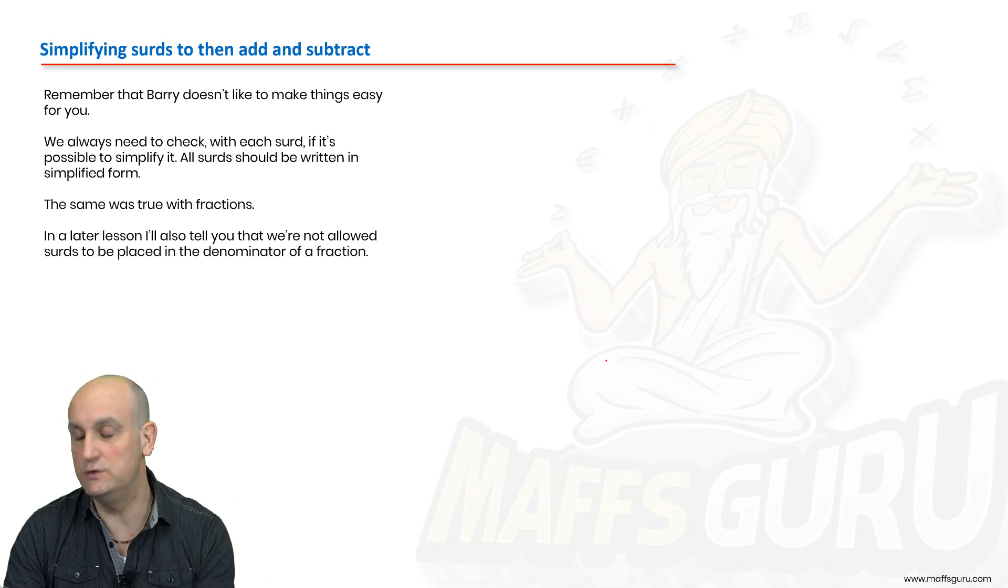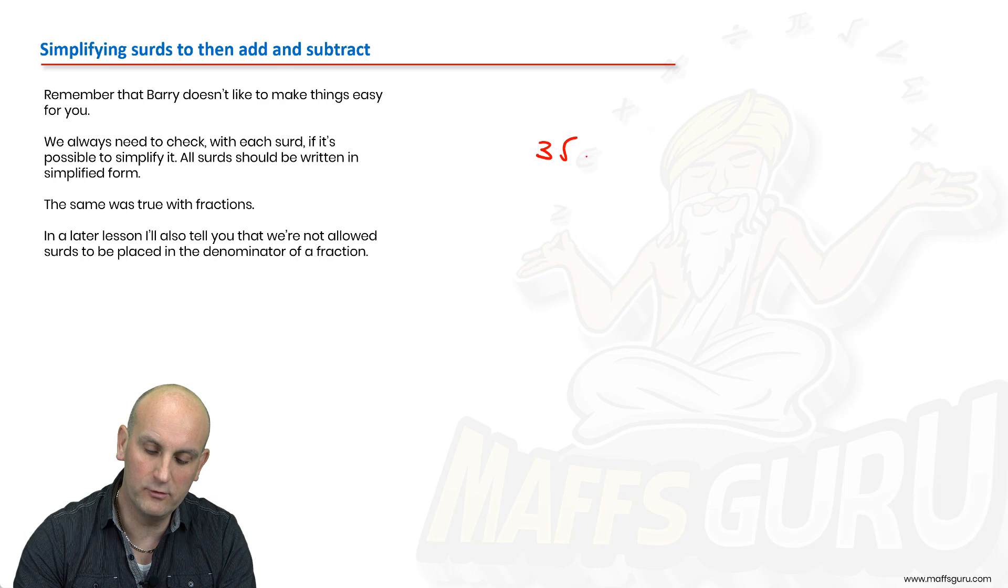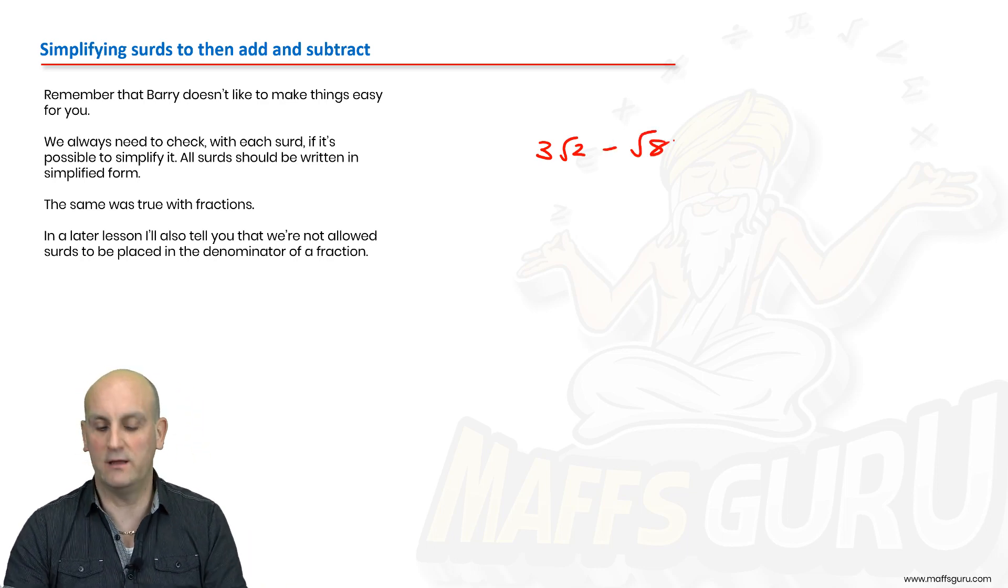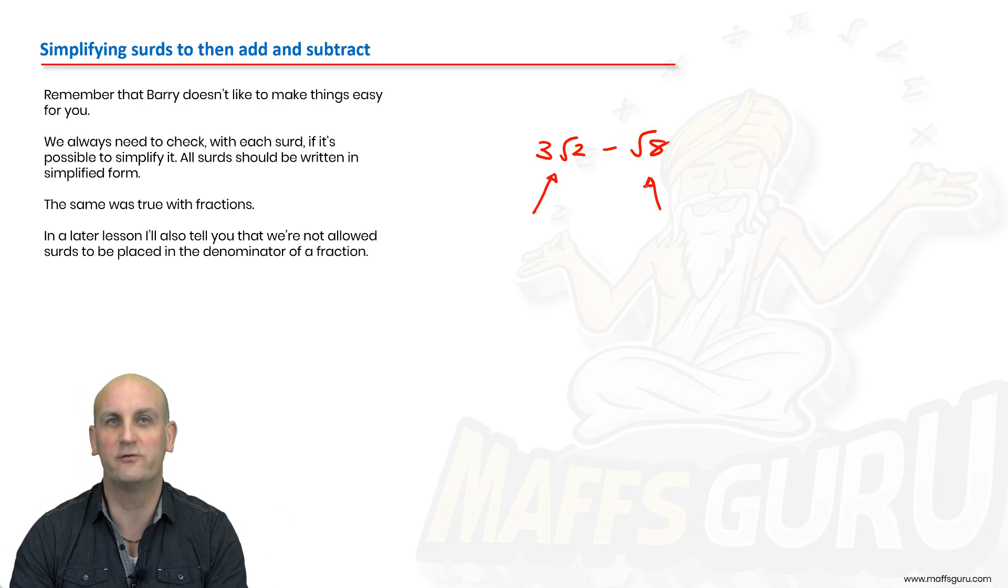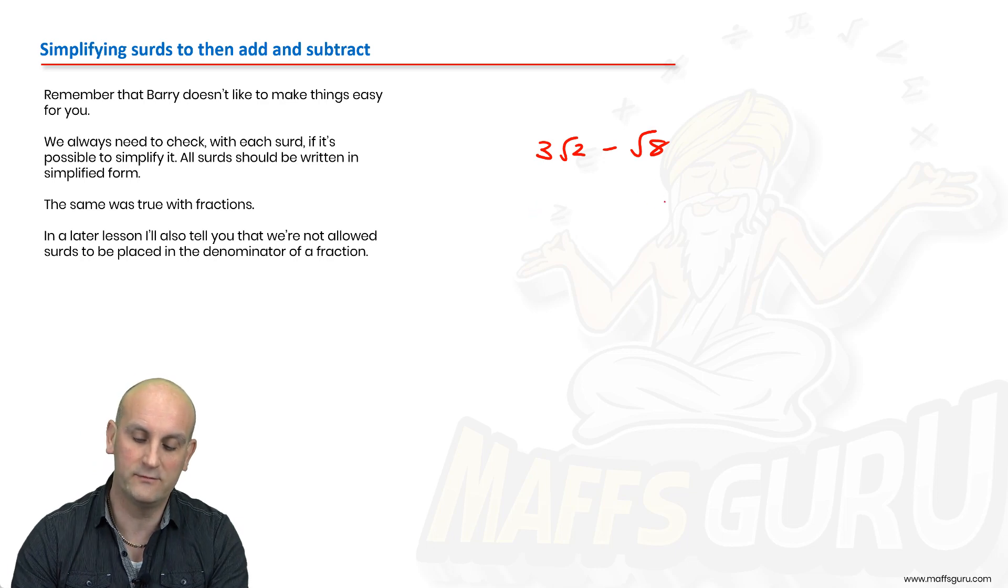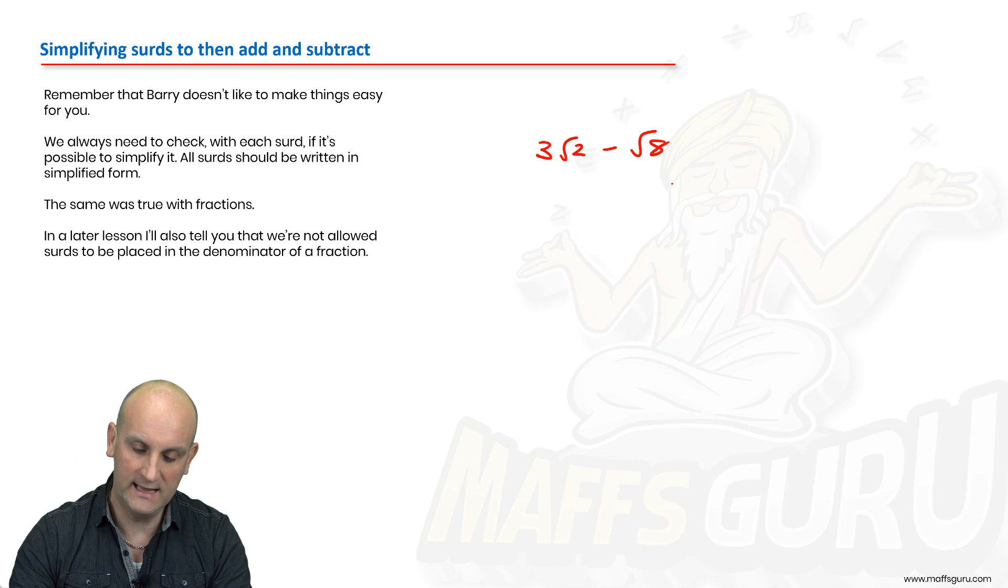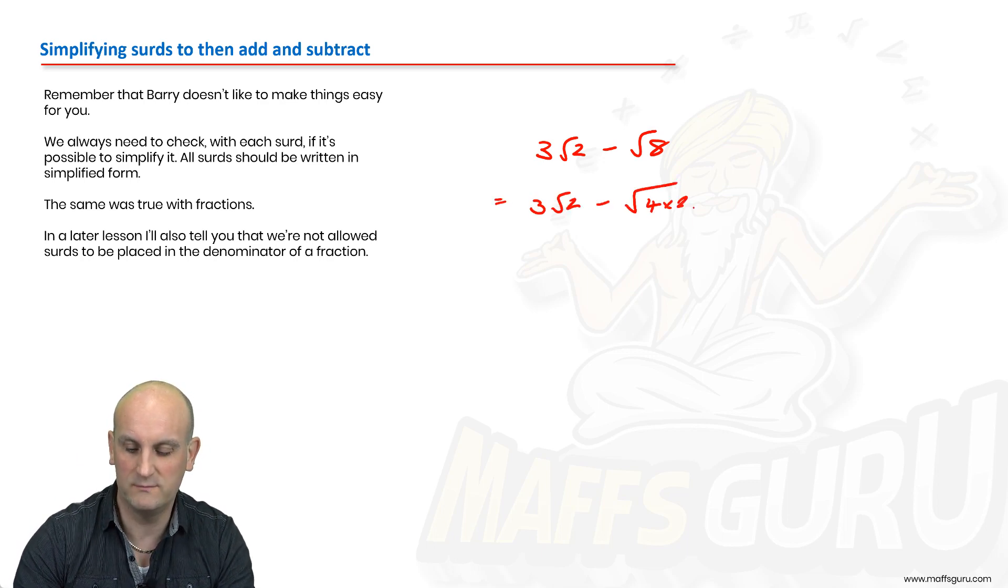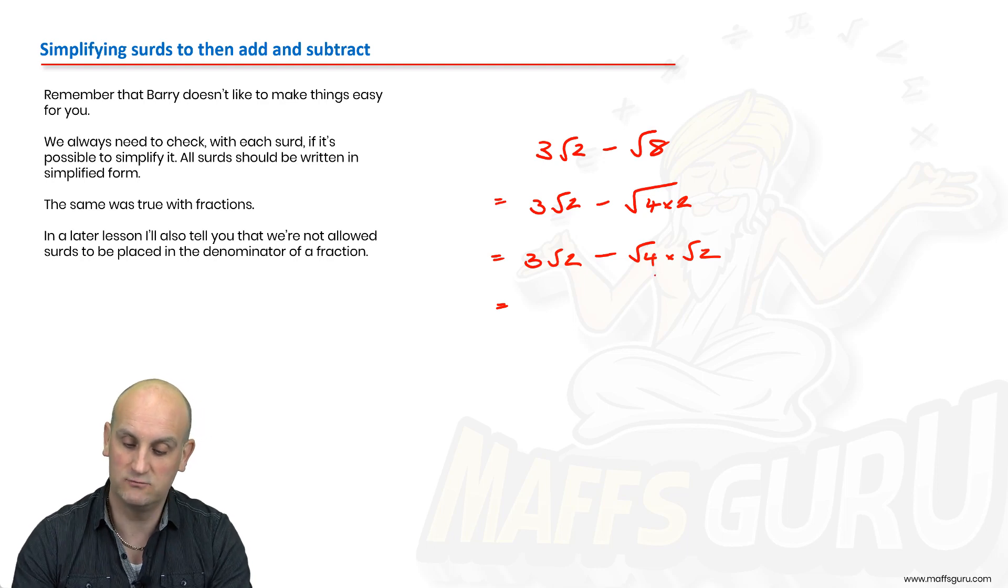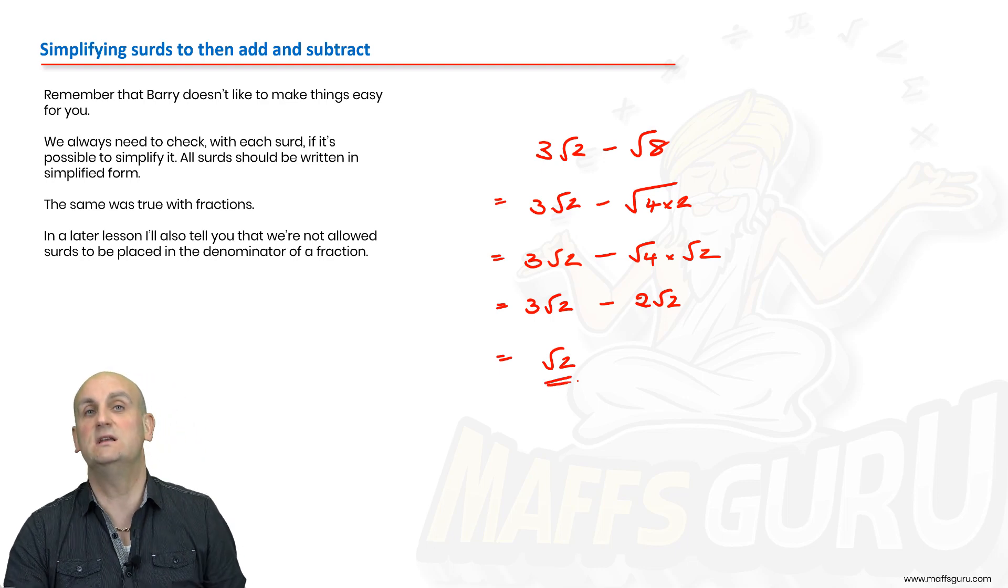As I say here, huge trick in maths, is to say things like 3 root 2 minus root 8. And lots of people look and go, oh no, can't do that. But it's a huge trick. With every single surd, you should look to check to see whether it can be simplified. In this situation, root 2 can't go any lower. But what about root 8? Can that divide by a square number? 8 can be split up. So that becomes 3 root 2 minus the root of 4 times 2. That gives me 3 root 2 minus root 4 times root 2. So that becomes 3 root 2 minus 2 root 2. And lo and behold, just root 2. So as it turns out, that can be simplified.